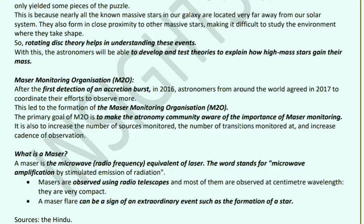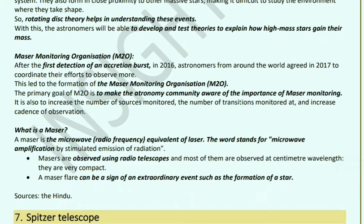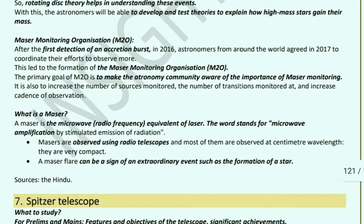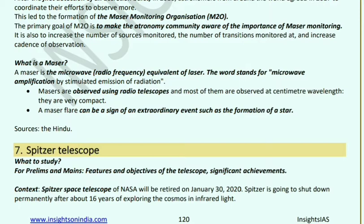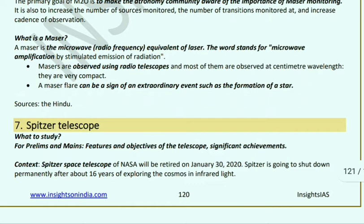One initiative is the Maser Monitoring Organization (M2O). When the first accretion burst was detected in 2016, astronomers from around the world agreed in 2017 to coordinate efforts and observe more, leading to the formation of the Maser Monitoring Organization. Its main goal: make the astronomy community aware, increase the number of sources monitored, number of transitions monitored, and cadence of observation. A maser is a microwave radio frequency similar to a laser, and its full form is Microwave Amplification by Stimulated Emission of Radiation. Masers are observed via radio telescopes, mostly at centimeter wavelength. Major flares are a sign of extraordinary events like star formation.